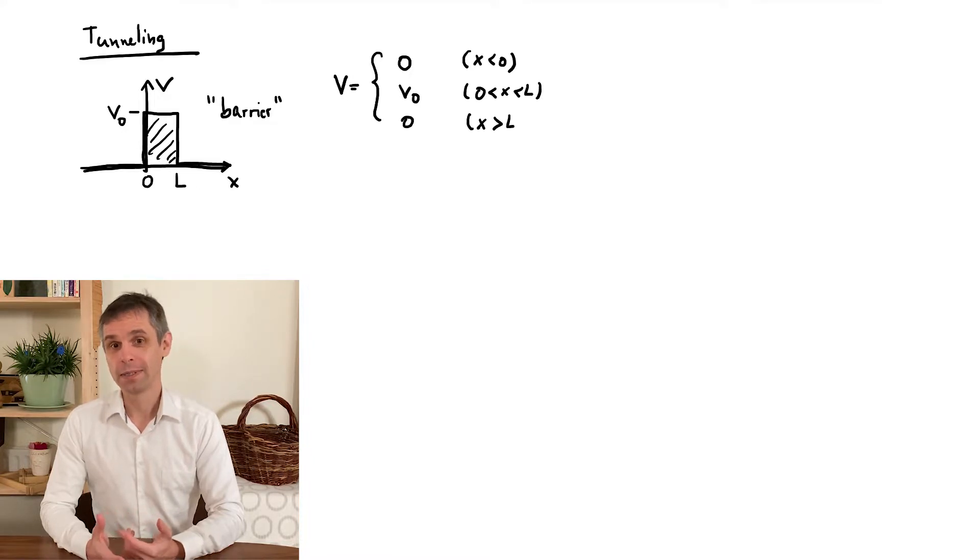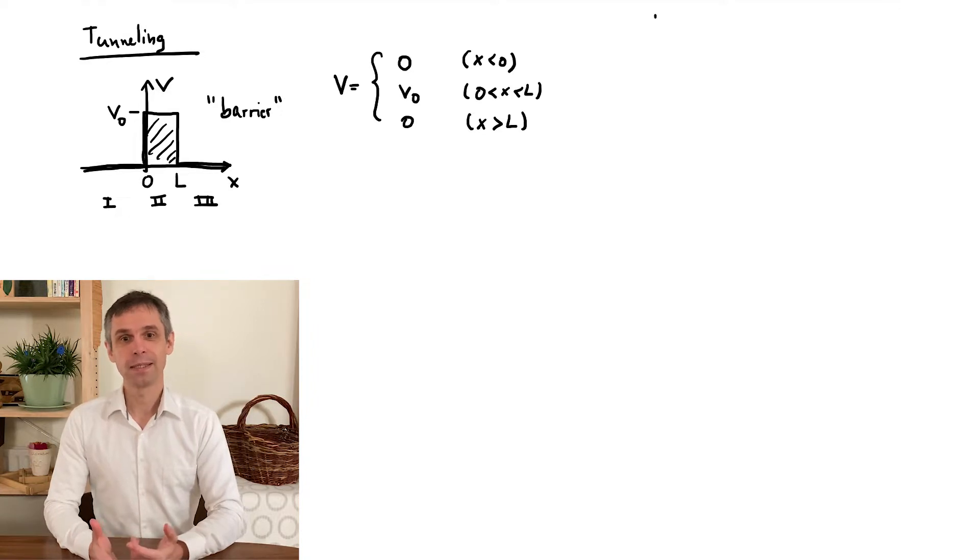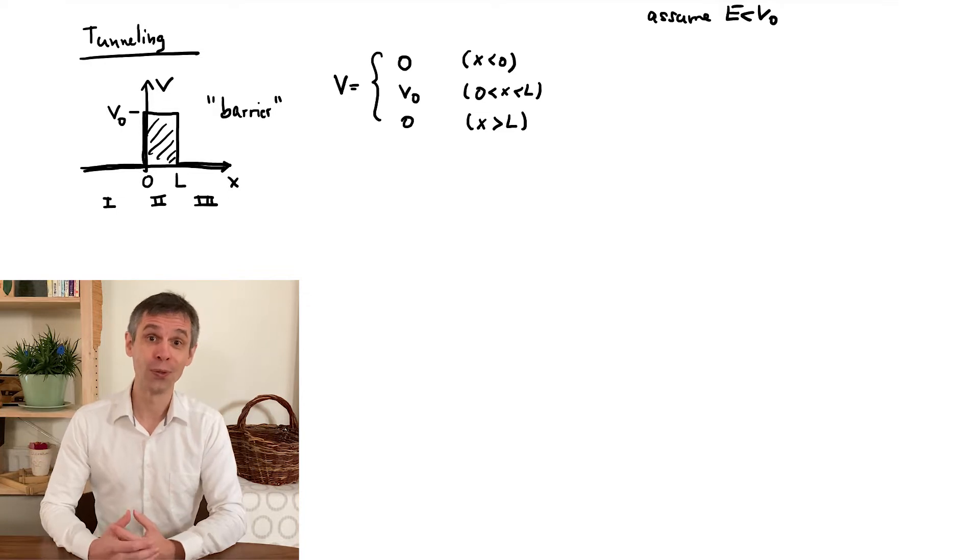For the quantum mechanical description, it is convenient to label the three regions, which I do here with the Roman numerals 1, 2, 3. We are interested in the case of the energy being below the potential energy in the barrier, so focus on this.